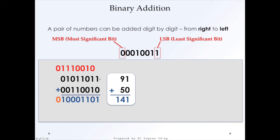Binary addition works this way: if you see a 1 and 0, you bring this down as a 1. But the moment you see a 1 and a 1, you get a 0 and you carry the 1 over to the top row. 1 and 0 and 0 is 1, giving you another 1. When you have 1 and 1, you get 0 and carry 1 over again. This carry also gets propagated. In this particular binary addition there's no overflow, so nothing gets carried over beyond the final bit.